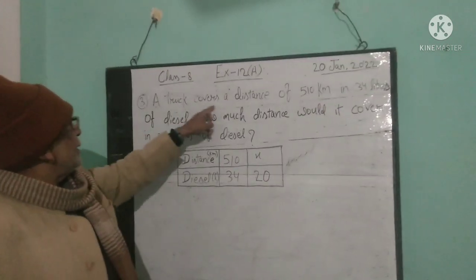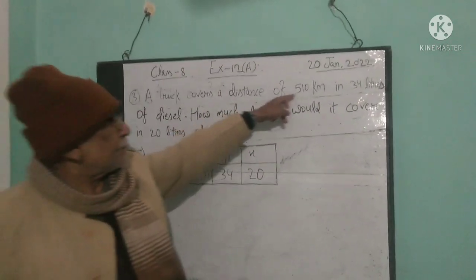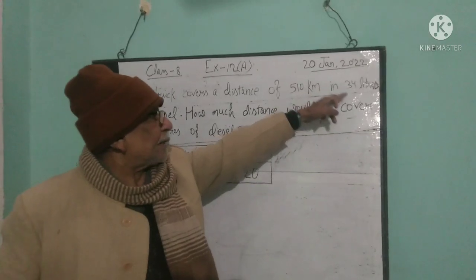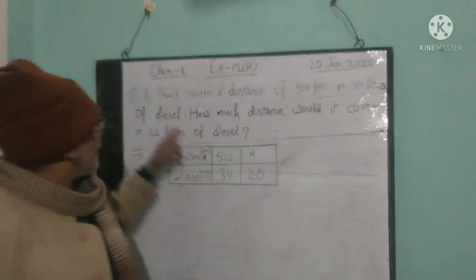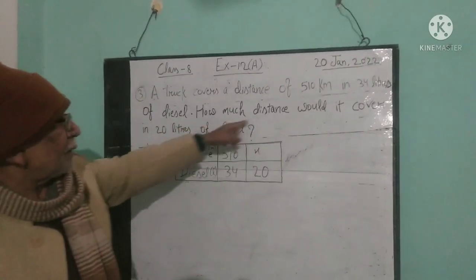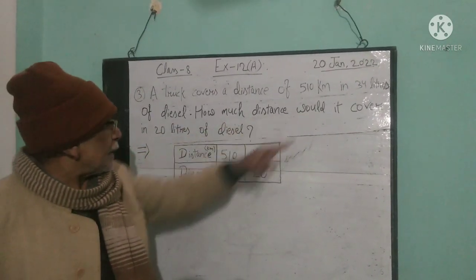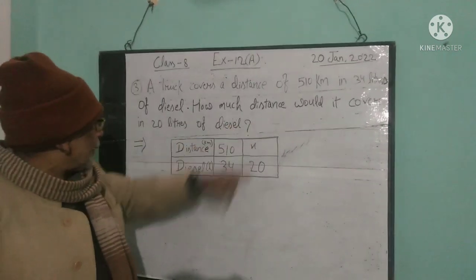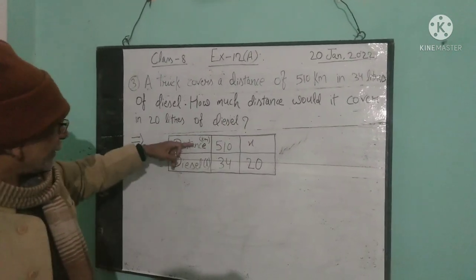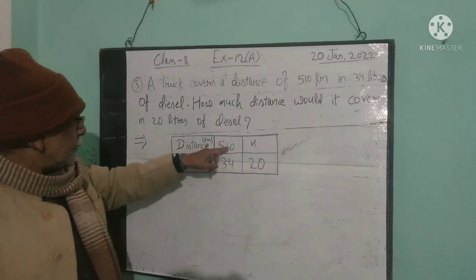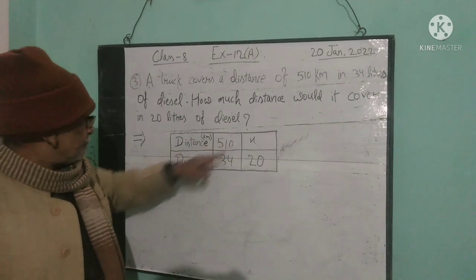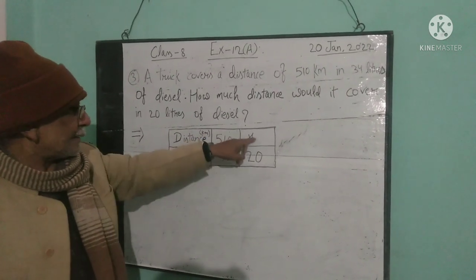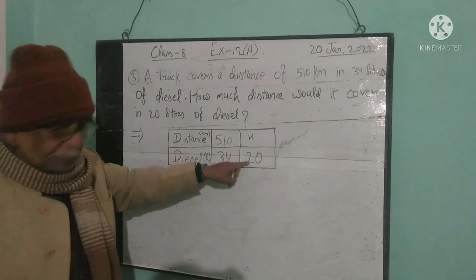A truck covers a distance of 510 km in 30 litres of petrol. How much distance will it cover in 20 litres of petrol? Distance is 510, petrol is 30. Distance is unknown, petrol is 20.